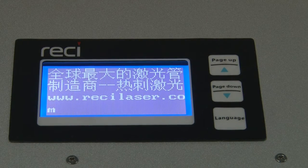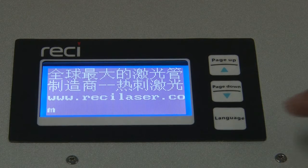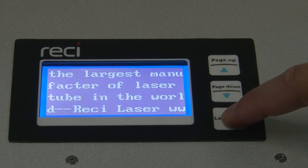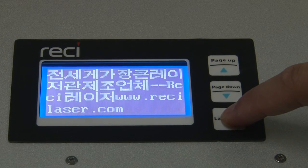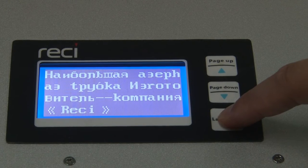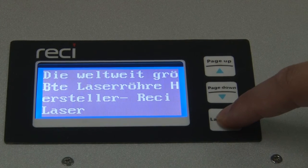When any problem of your laser tube occurs in operation, it can be stopped timely and issue an alarm. In the meanwhile, a problem description and possible solutions will be shown on it, which can significantly reduce the after-sales cost.